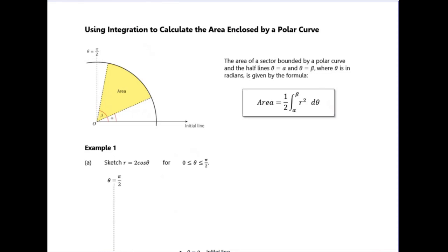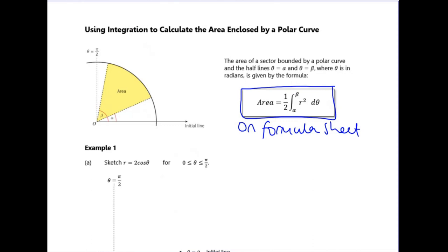Polar integration isn't just the case of integrating your curve, integrating your equation between limits. There is a formula for this, which is on your formula sheet. So it turns out if you want to find an area for a polar graph, you use that formula. It's always an area between two half lines. The normal integration that you do is area between the graph and the x-axis - it's no longer like that for polar coordinates.